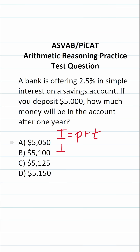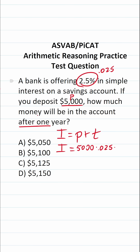We're going to be calculating I. Principal is the amount that you deposit into the account, so in this case it's going to be 5,000. Your interest rate is given right here — it's 2.5%, which we express in decimal form as 0.025. So this becomes 5,000 times 0.025. T is time — how long is the money going to be in the account? It says right here after one year, so T is 1.